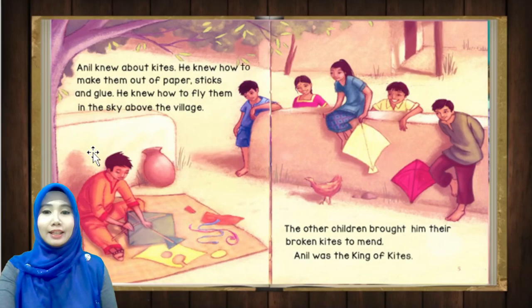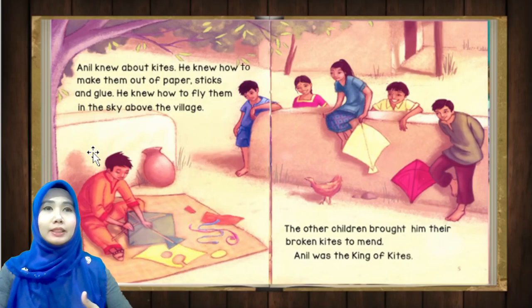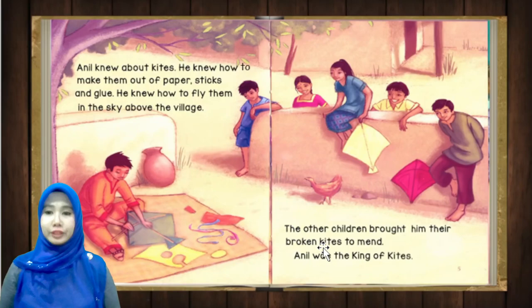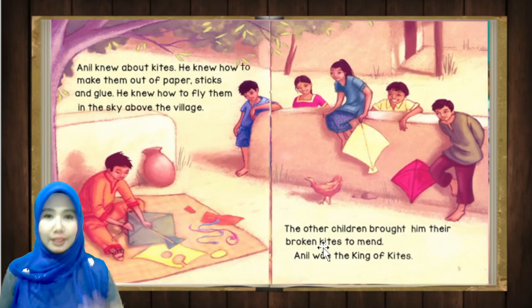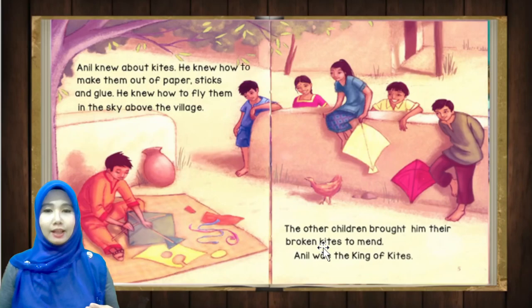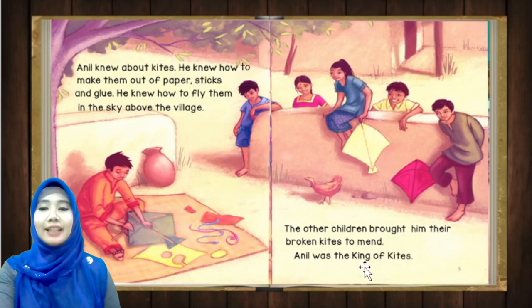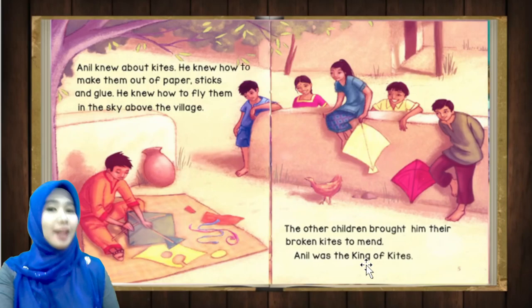He knew how to fly them in the sky above the village. Dia juga tahu macam mana nak menerbangkan layang-layang tersebut di atas langit ataupun kampung tersebut. The other children brought him their broken kites to mend — layang-layang yang rosak untuk dibaiki. Mend means baiki. Annual was the king of kites. Annual adalah raja — what is the meaning of king? Raja of kites — layang-layang.